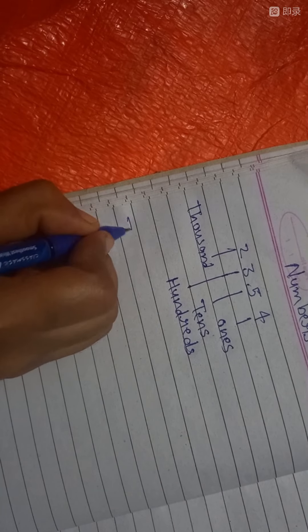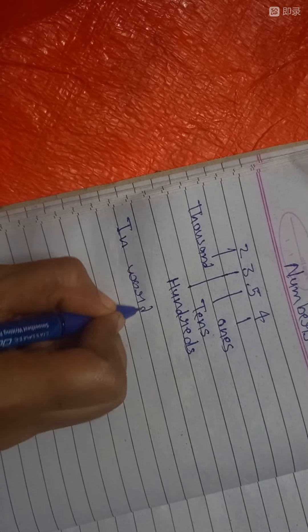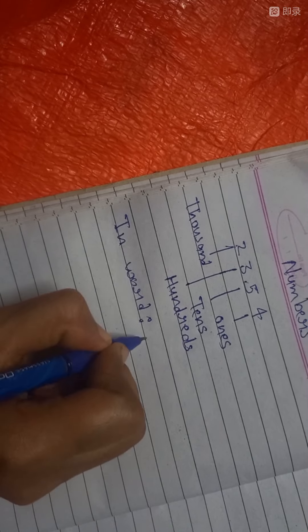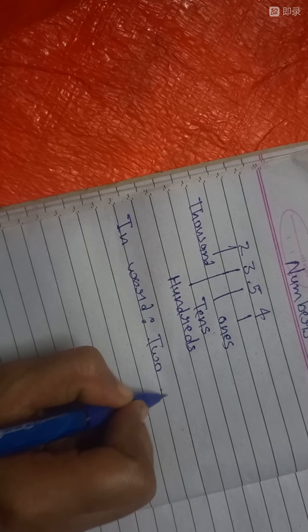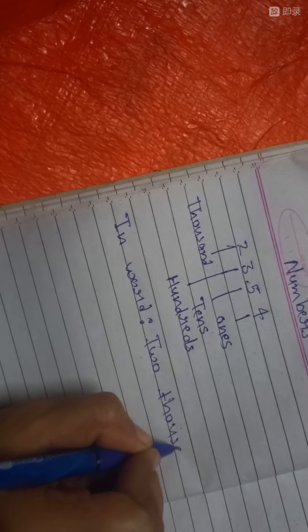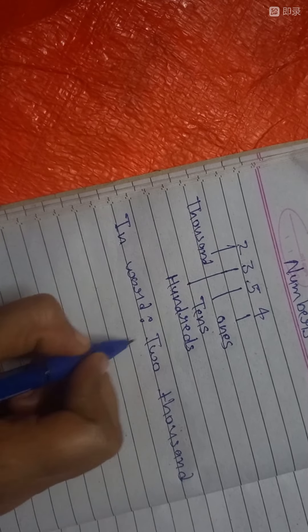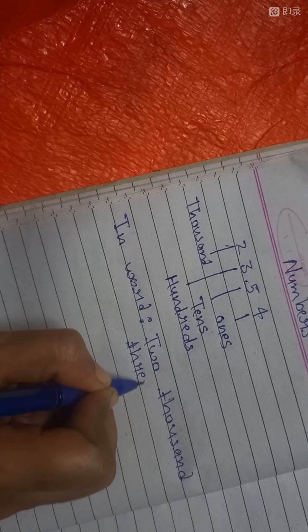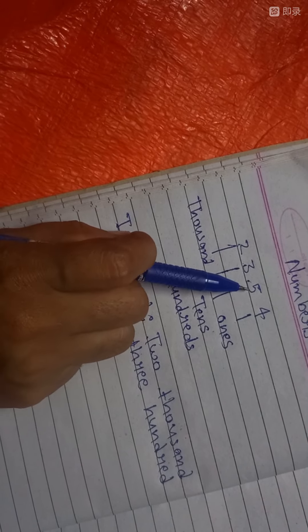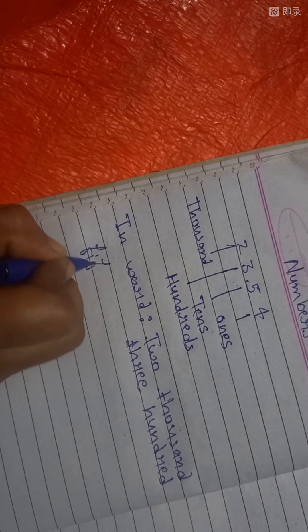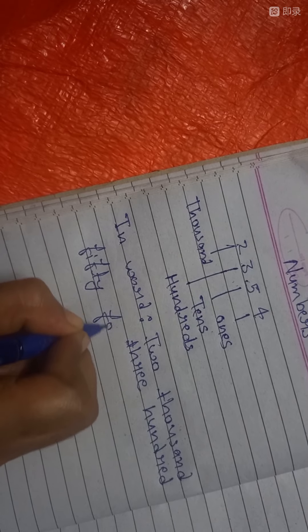We read this number inward: two thousand, three hundred, fifty-four.